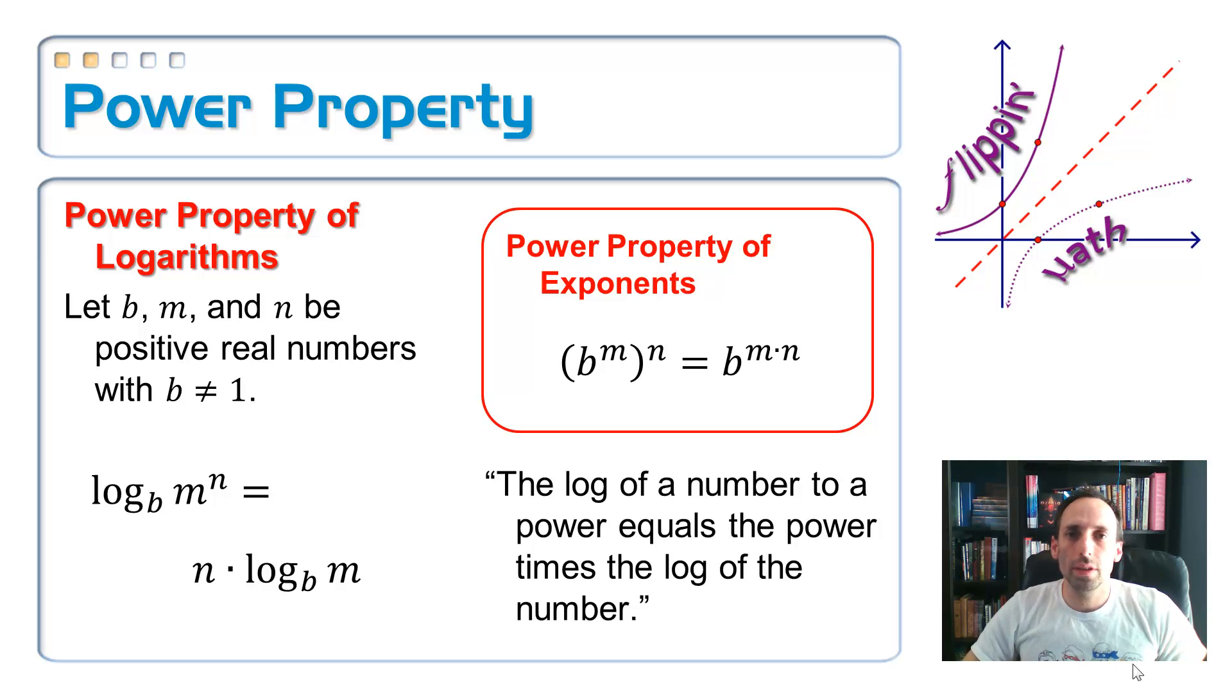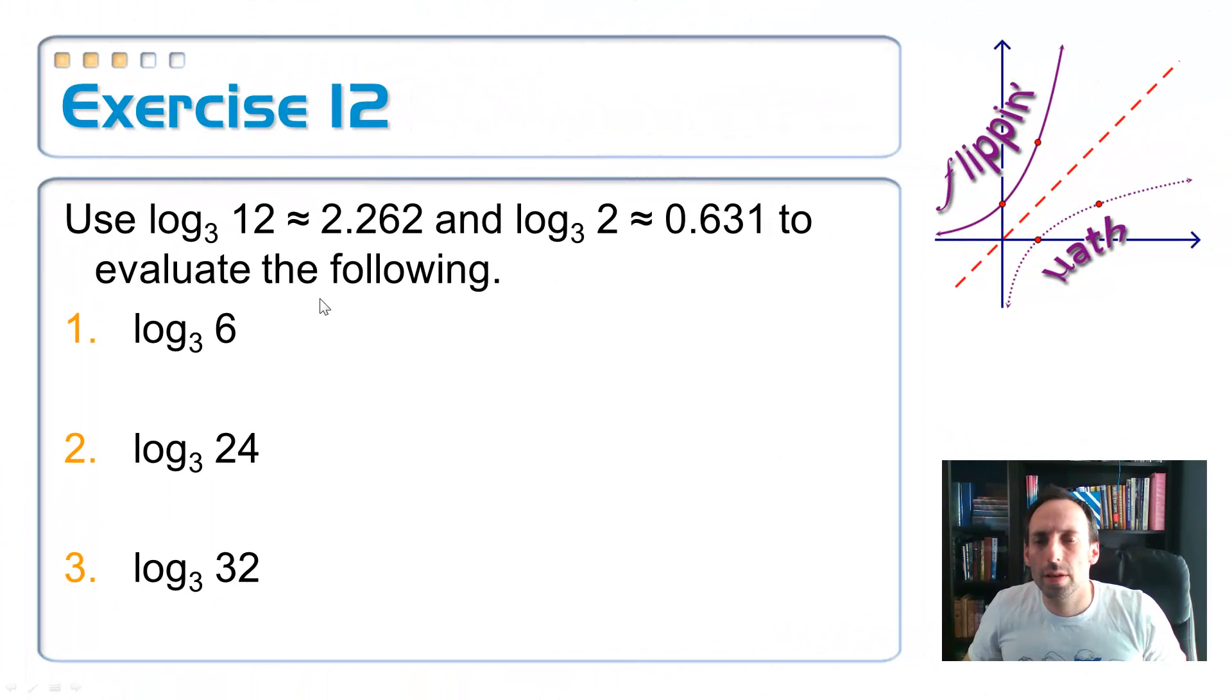Let's see if we can apply these properties. All right. So let's simplify each of these expressions, evaluate each of these expressions. I'm given the log base 3 of 12 is equal to some number and the log base 3 of 2 is approximately equal to some other number. And what we're trying to do is apply those properties that we just talked about. We've got the power property and the quotient property and the product property. So let's see if we can do that. We got the log base 3 of 6. I'm trying to see is there anything I can do with the 12 and the 2 in order to get 6. I can divide them.